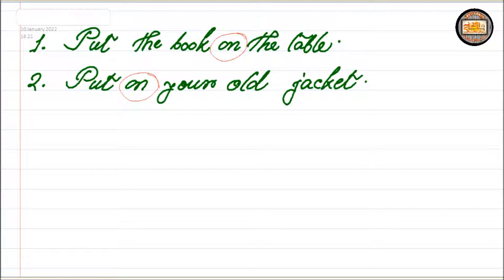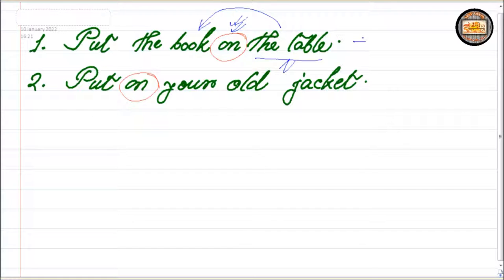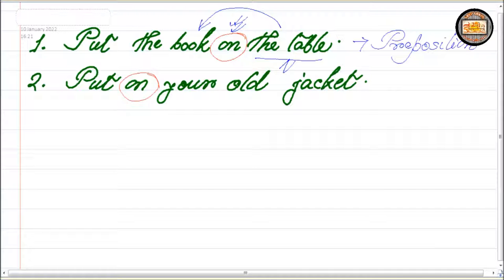Now tell me dear friends, what are the parts of speech for these two 'on' in these two sentences? If you consider the first 'on,' it introduces a noun — 'the table.' So obviously this 'on' is setting up a connection between 'the table,' the noun, and the rest of the sentence. So obviously here 'on' is used as a preposition. Yes dear friend, it's a very vital point to remember — here 'on' is used as a preposition.